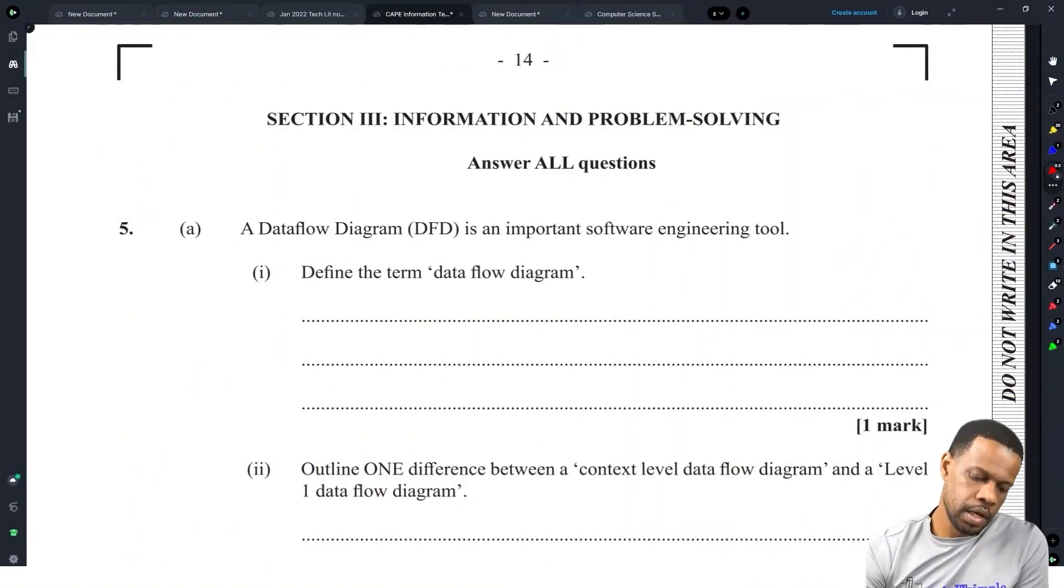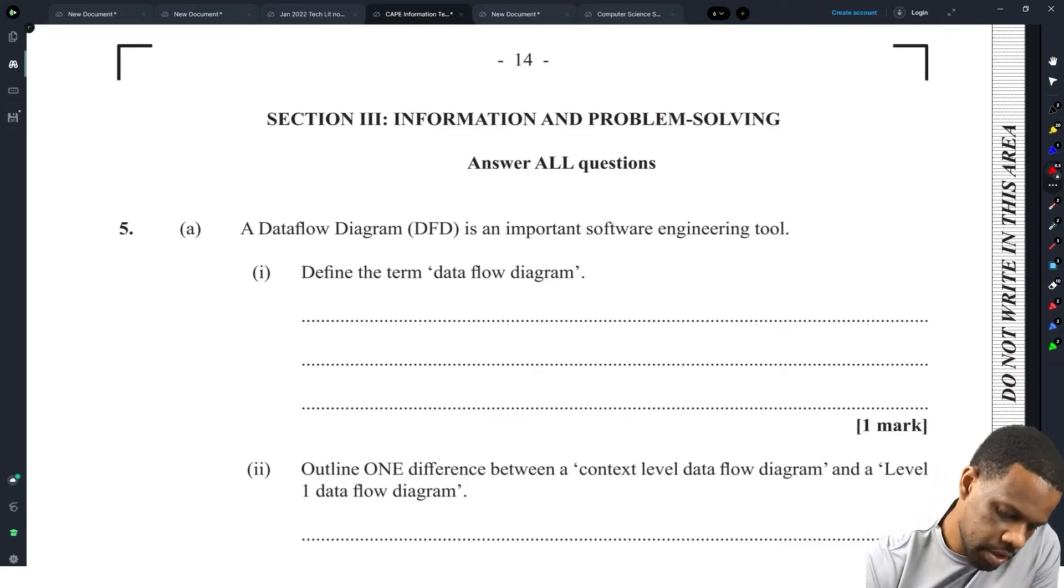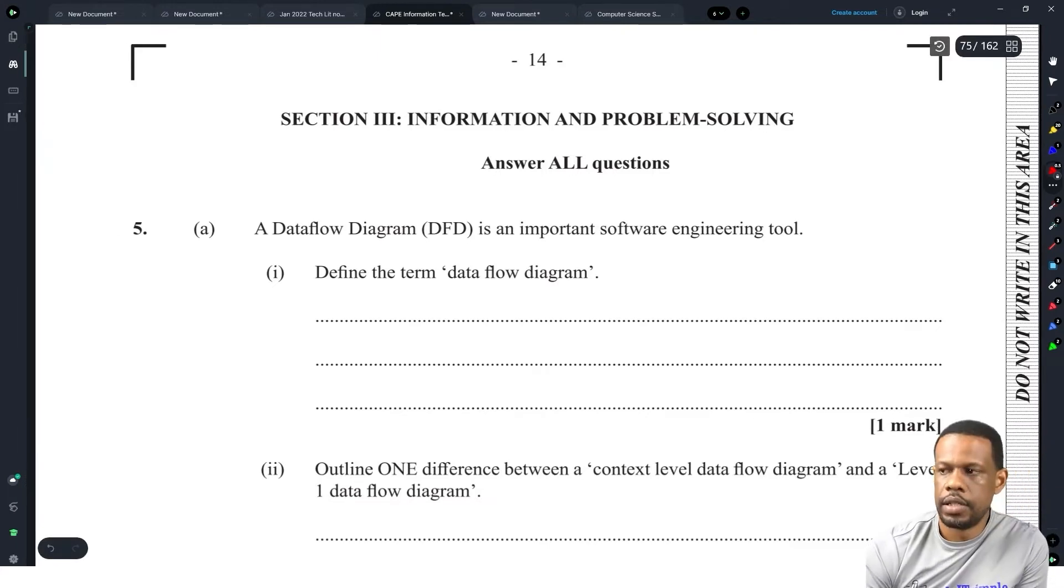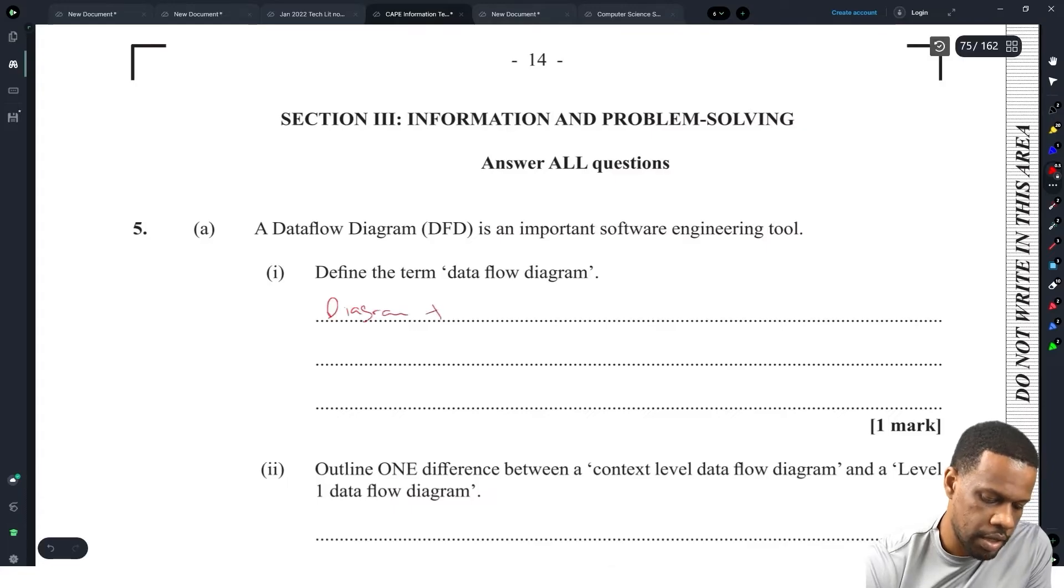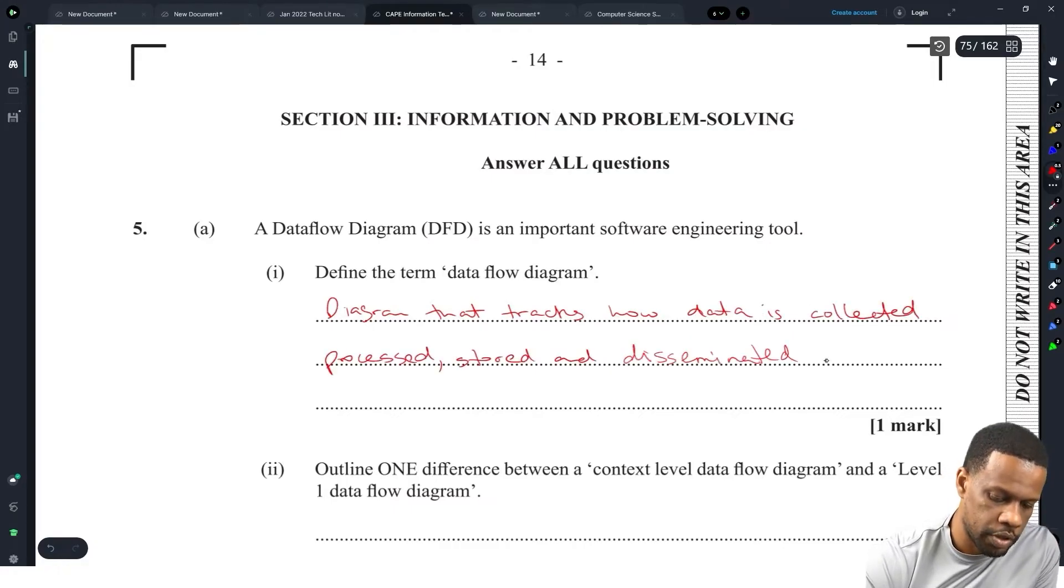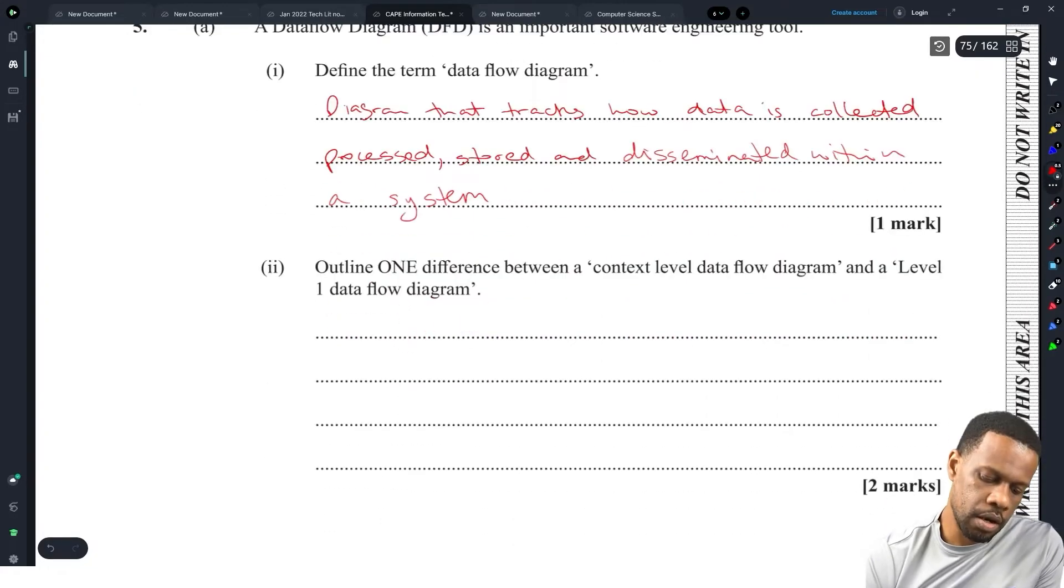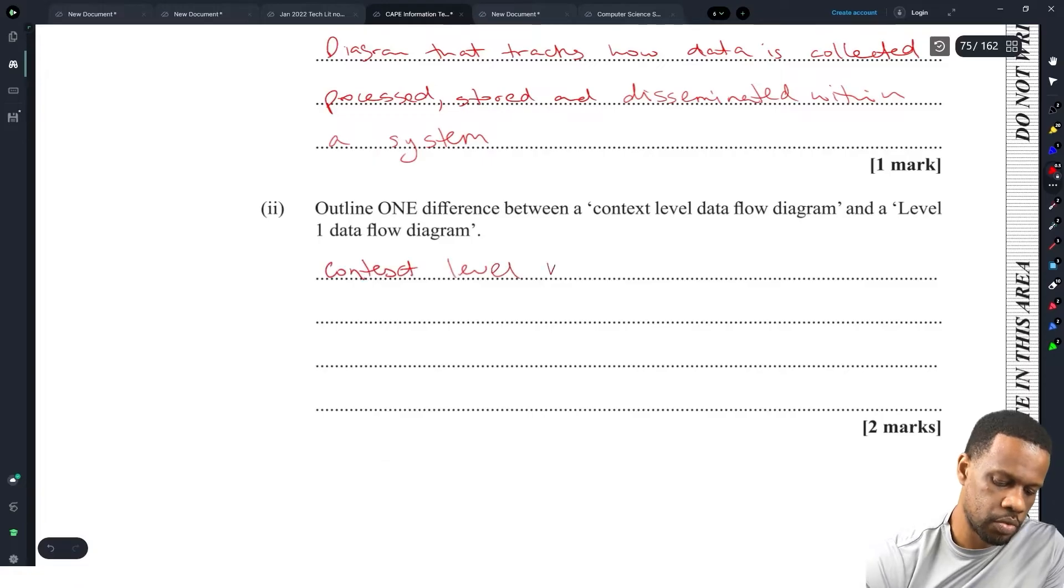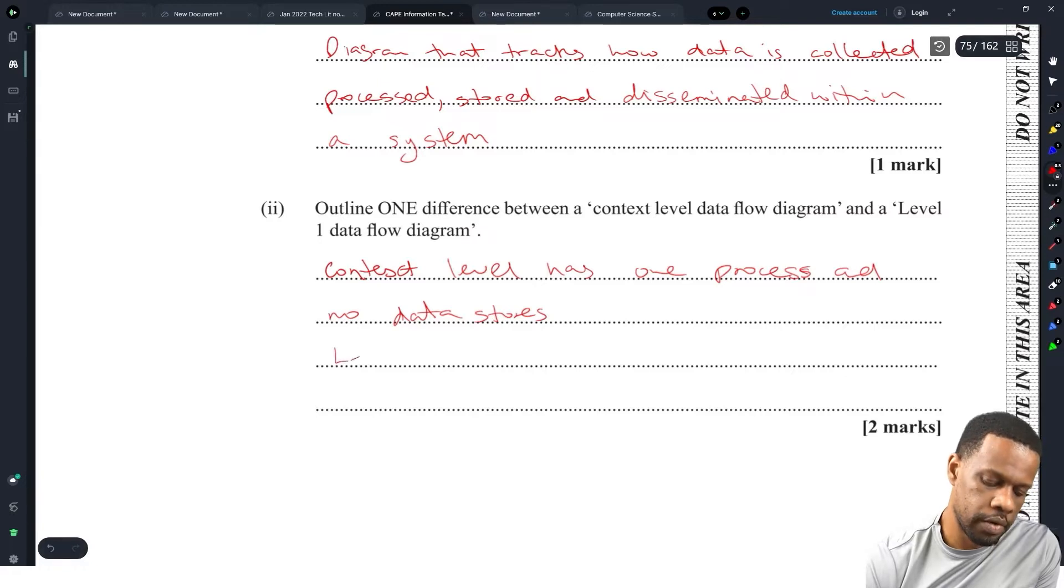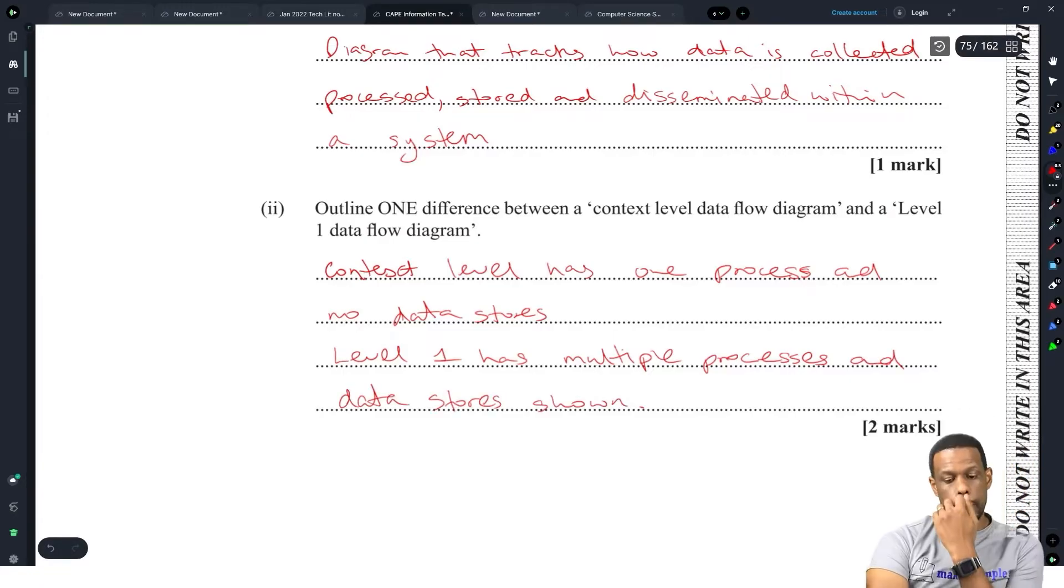A data flow diagram is an important software engineering tool. Define the term data flow diagram. A data flow diagram is a diagram that tracks how data is collected, processed, stored, and disseminated within a system. One difference between a context level data flow diagram and a level one: a context level has one process and no data stores, while a level one has multiple processes and data stores.